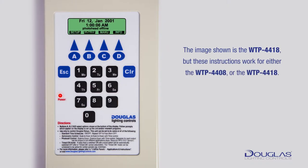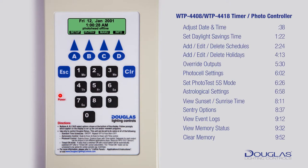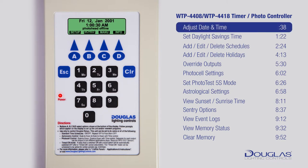The image shown is the WTP4418, but these instructions work for either the WTP4408 or the WTP4418. Welcome to the WTP4408 and 4418 Timer Photo Controller walkthrough. This step-by-step guide will go through the different menu options available to you when programming the controller. Note that if you ever need to get back to the main menu, the Escape key will always back you out of any menu and bring you back to the main screen. Let's start with adjusting the day and time.